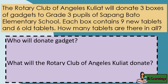The Rotary Club of Ann Les Couliad will donate three boxes of gadgets to grade three pupils of Sepang Bato Elementary School. Each box contains nine new tablets and six old tablets. How many tablets are there in all?